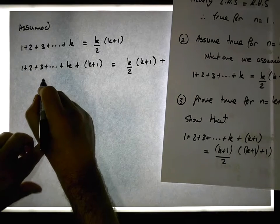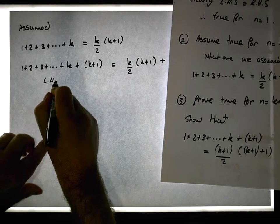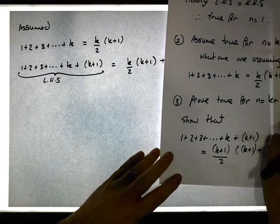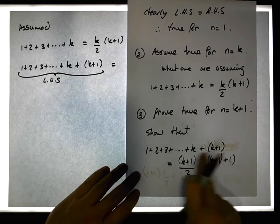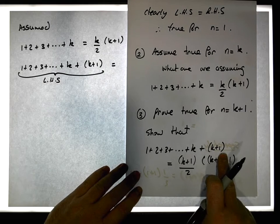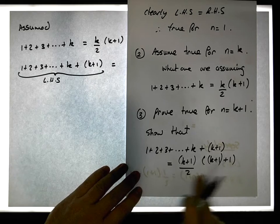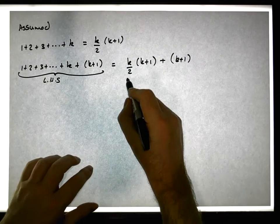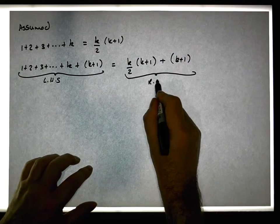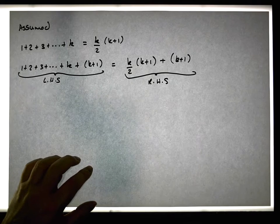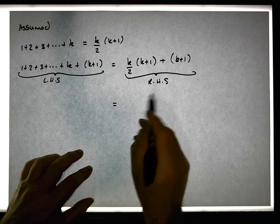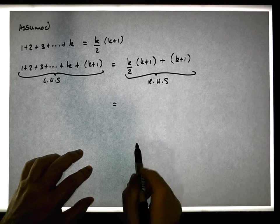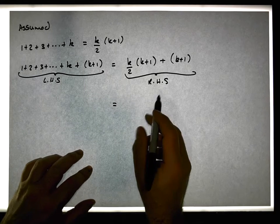The left hand side here is exactly the left hand side of what we want to show. The right hand side is what we need to develop. Looking at the right hand side, you can actually see that there's a common factor between this term and this term — there's a k plus one common.